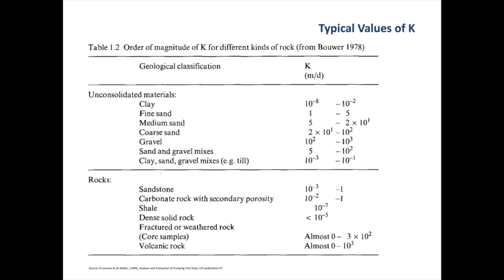Here are some typical values of hydraulic conductivity, which you can download for free from the internet. Gravel has a K of 10² to 10³, that means 100 to 1000 meters per day — that's pretty high. But if our gravel was mixed with medium sand, then the medium sand would determine the overall hydraulic conductivity of the material, and in that case it would only be between 5 and 20 meters per day.